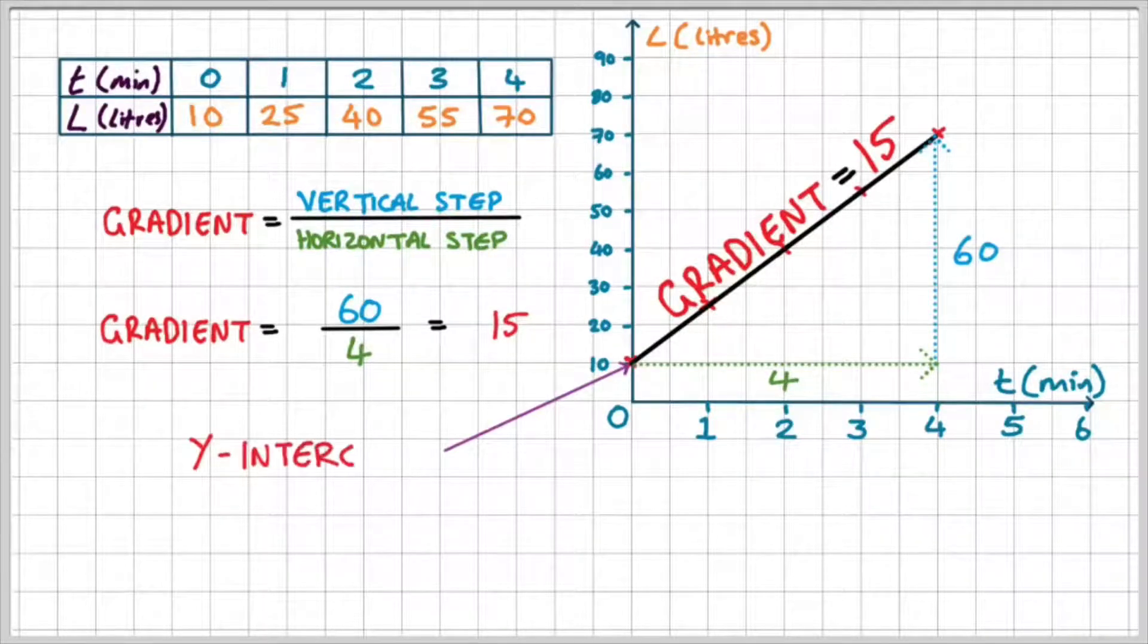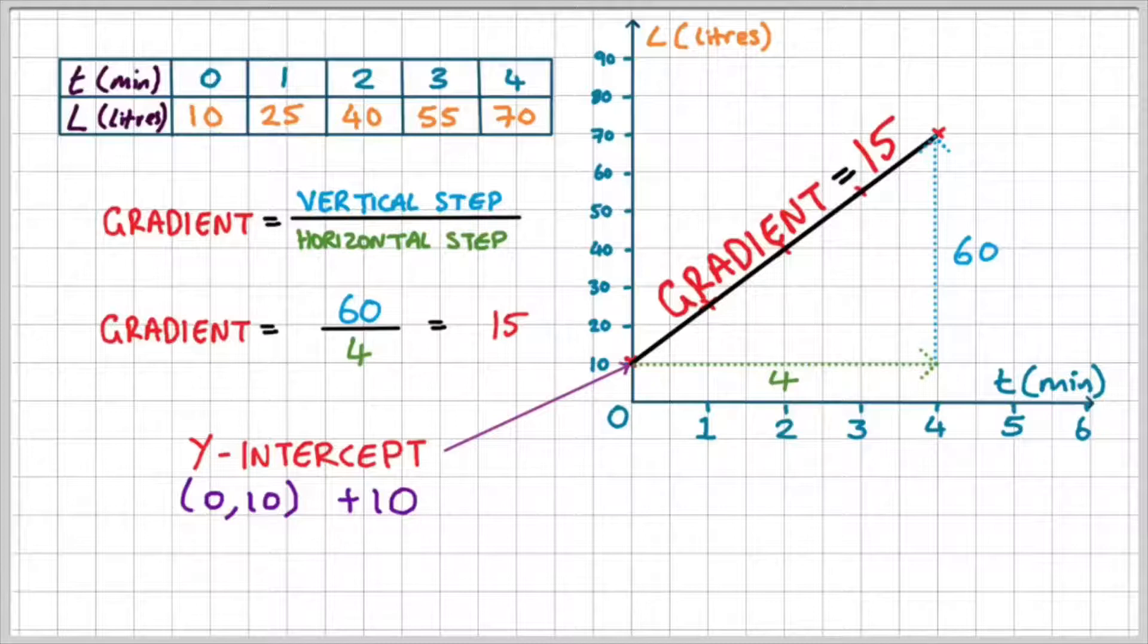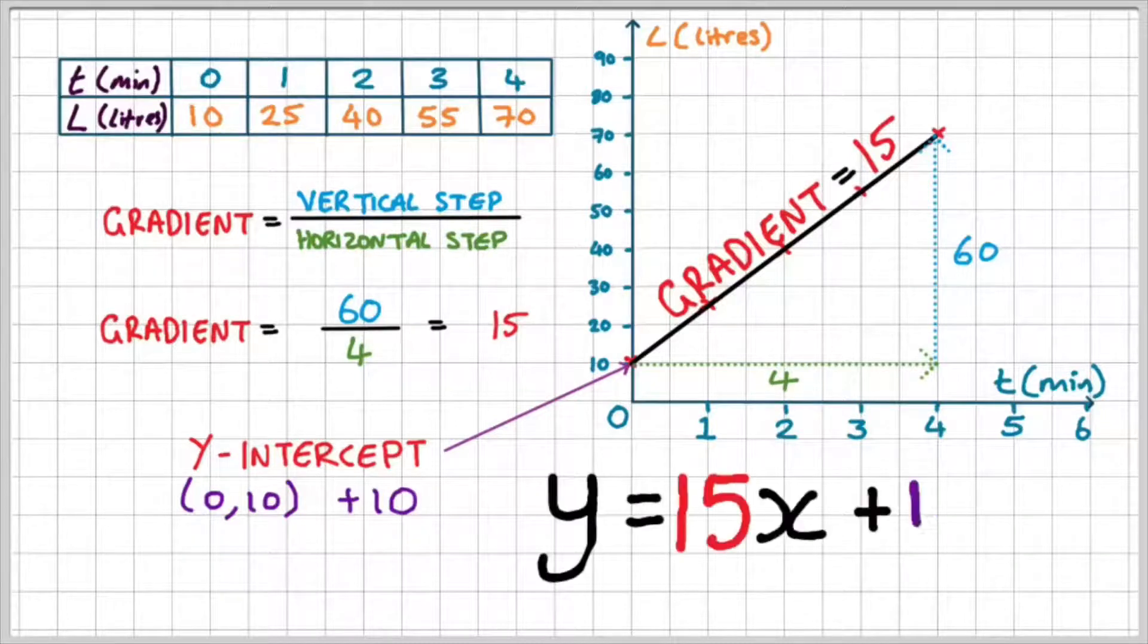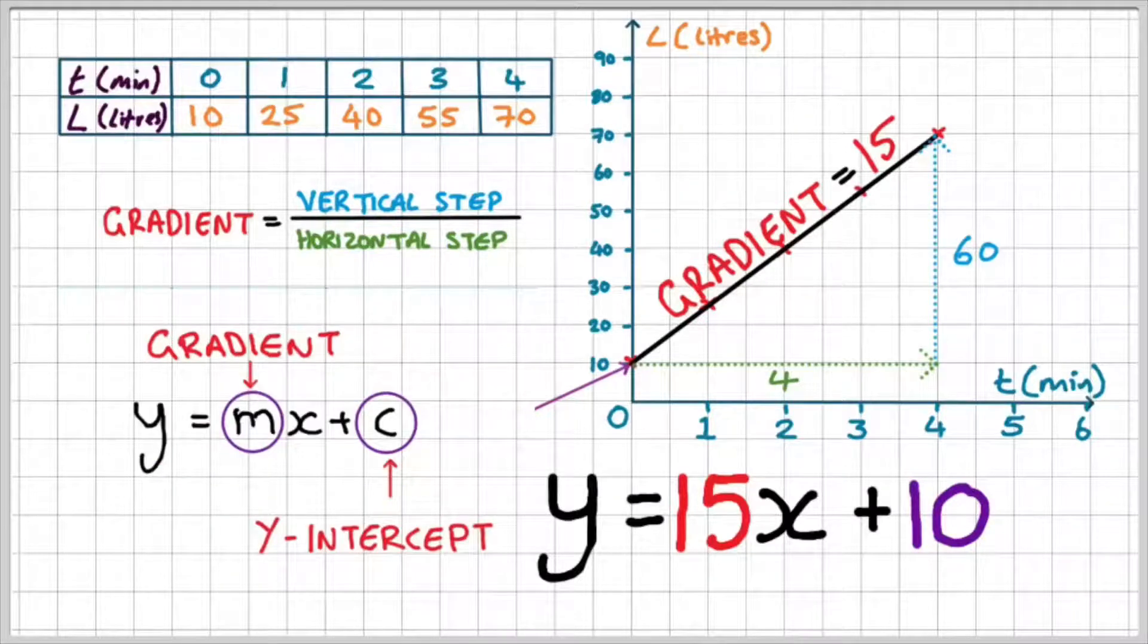Next I need to work out the y-intercept, and I can clearly see that from this point here, the point where the line cuts the y-axis, is 10. So if I use the gradient and the y-intercept, I can write an equation for the line as y equals 15x plus 10. Remember, m represents the gradient and c represents the y-intercept.